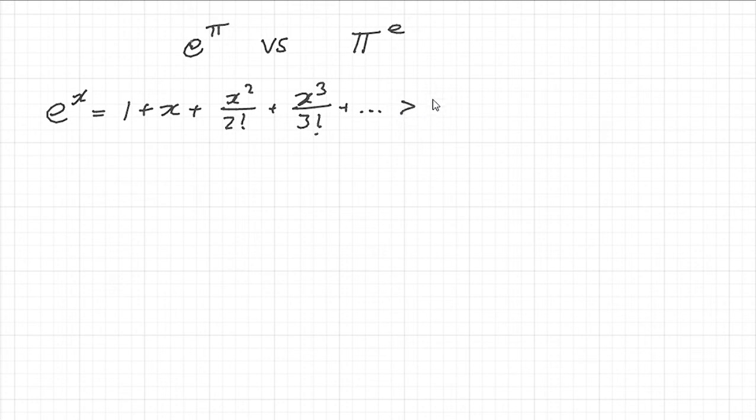And this is very clearly going to be bigger than 1 plus x whenever x is a positive number. Because obviously each of these terms here, if x is positive, each of these terms here is going to be positive. So obviously this is going to be at least 0 or strictly bigger than 0 and hence this whole thing is strictly bigger than 1 plus x.